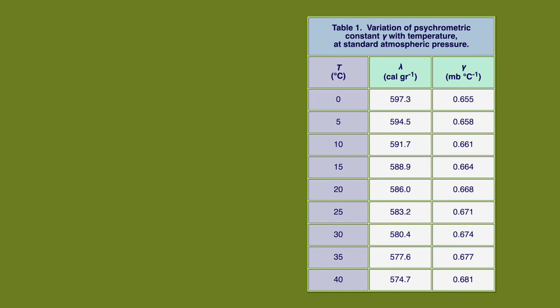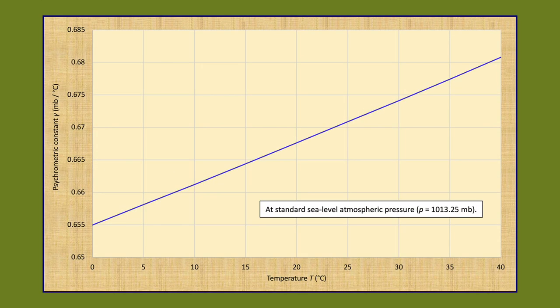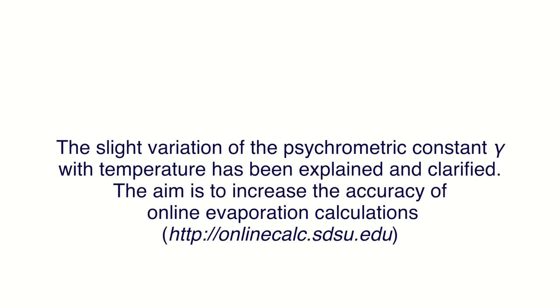Since lambda varies with temperature, gamma also varies with temperature. Table 1 shows the variation of the psychrometric constant gamma with temperature at standard sea level atmospheric pressure P equal to 1013.25 millibars. The slight variation of the psychrometric constant gamma with temperature has been explained and clarified, with the aim of increasing the accuracy of online evaporation calculations.